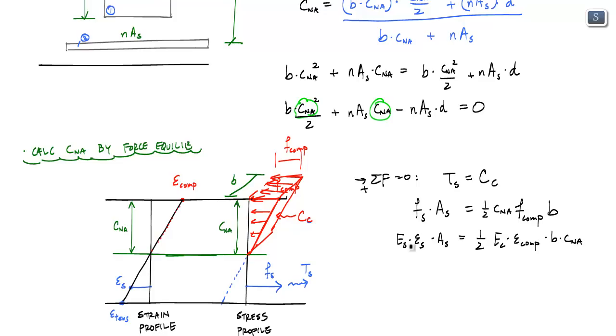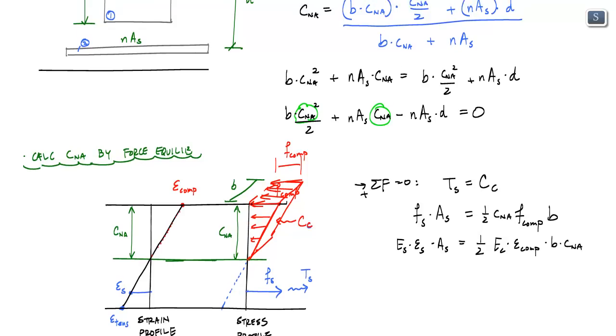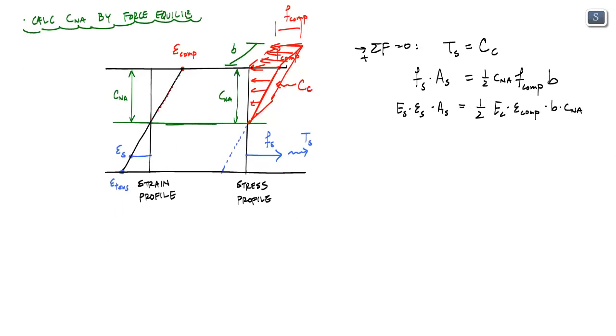And what I have is one equation and three unknowns. I have this epsilon S, epsilon compression, and CNA. And what I want to know is, is there a way I can relate these strains to my depth of neutral axis? And I can do that by looking at my strain profile. And if you can tell from the strain profile, just by using basically similar triangles, I can see that this distance right here is D minus CNA. And from basic trig or similar triangles, this epsilon S over D minus CNA is equal to epsilon comp, or epsilon, the compressive strain, divided by CNA.